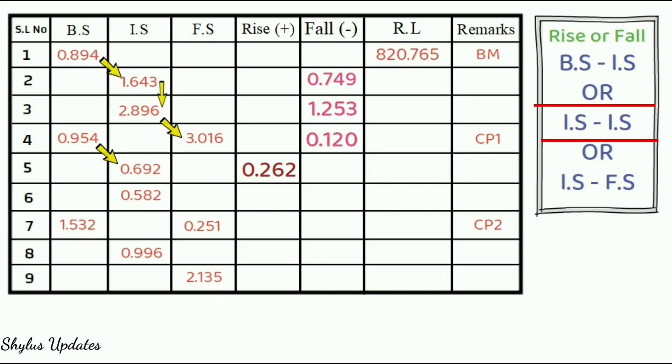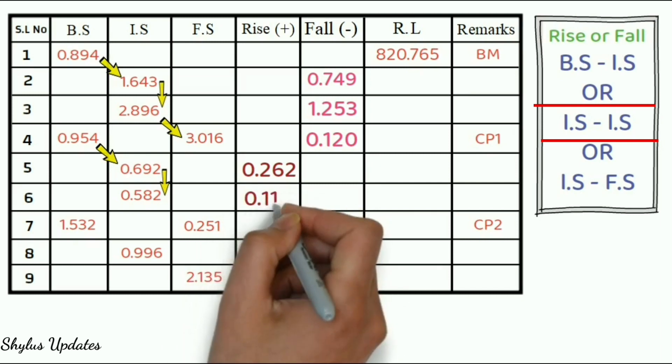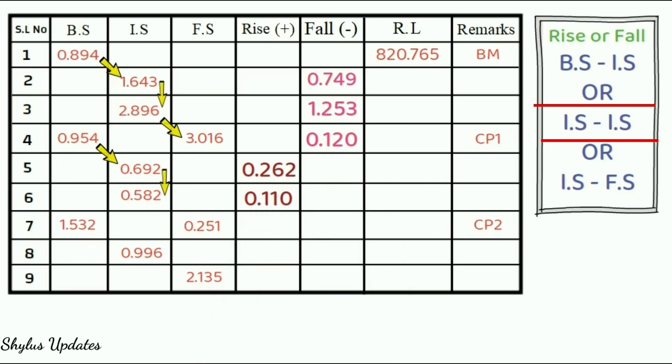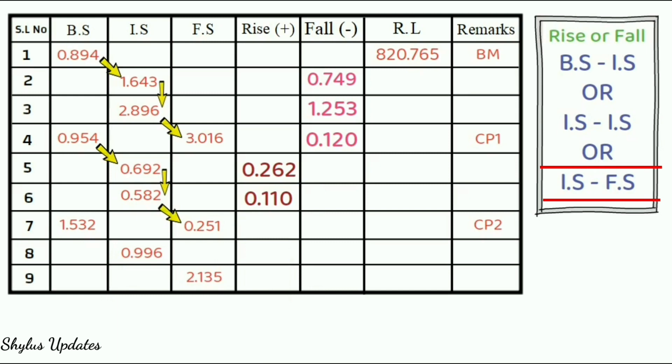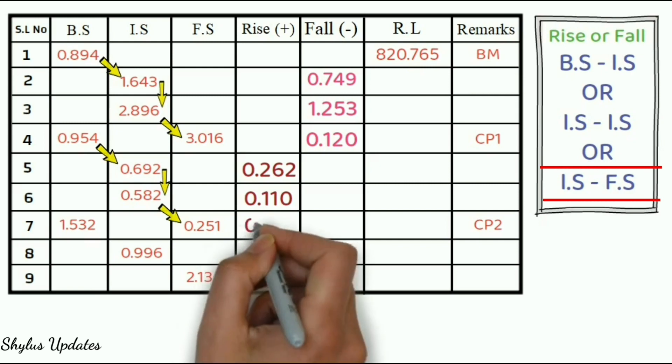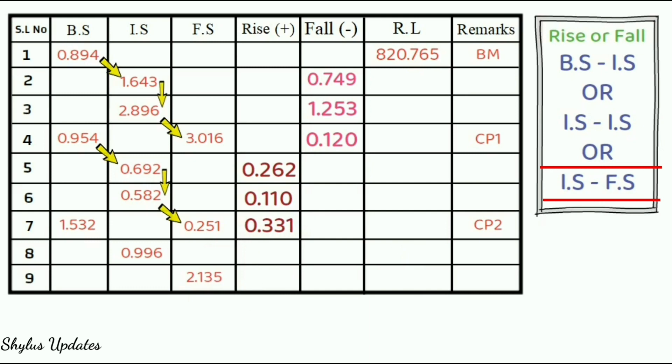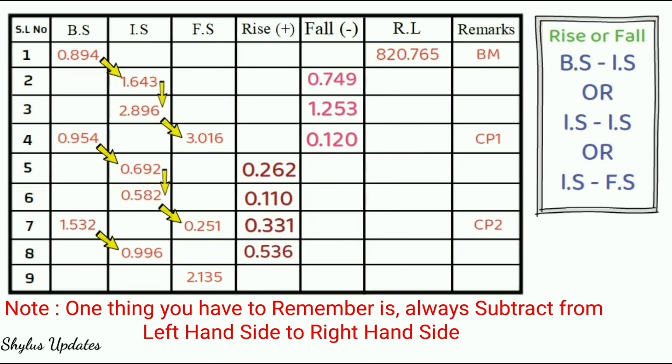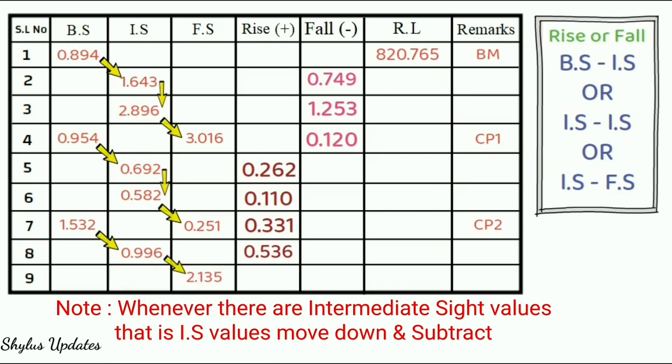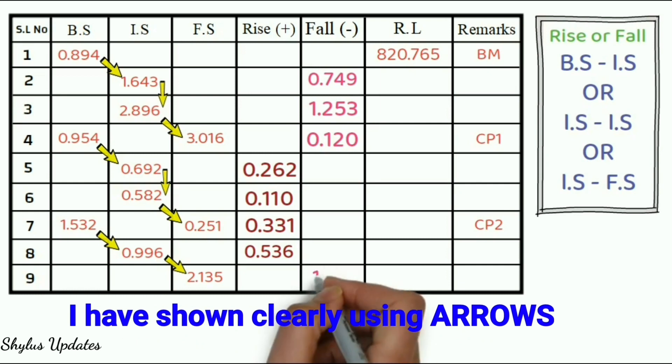Next, use IS minus IS formula. Subtract 0.692 minus 0.582. You will get 0.110, which is positive. So, enter in rise column. Similarly, use those formula and enter the values under rise or fall column. One thing you have to remember is, always subtract from left hand side to right hand side. And, whenever there are intermediate sight values, that is IS values, move down and subtract that. I have shown clearly using arrows.